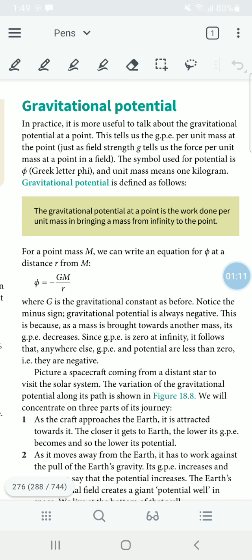Then φ equals negative GM upon r. Leave a line, put a star, and write down: The value is negative.